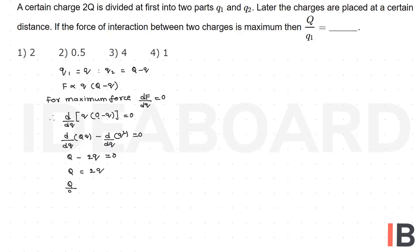They are asking the ratio q by q1, which equals two. As per the question, q1 is equal to q, so the ratio q by q1 is equal to two. The first option is the right option.